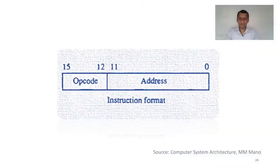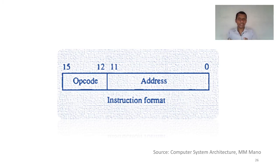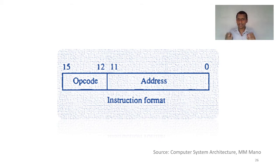The simplest instruction format is something like this. There are lots of formats, but we will keep it simple by sticking to the instruction format of the basic computer, or the MANU machine. This is the general instruction format for the MANU machine. There are two basic divisions: the operation code and the address part, also called the operand part.